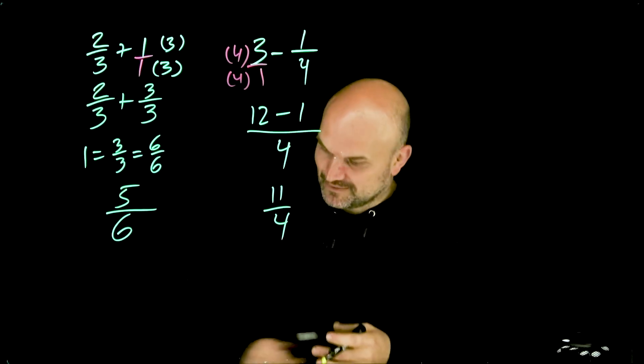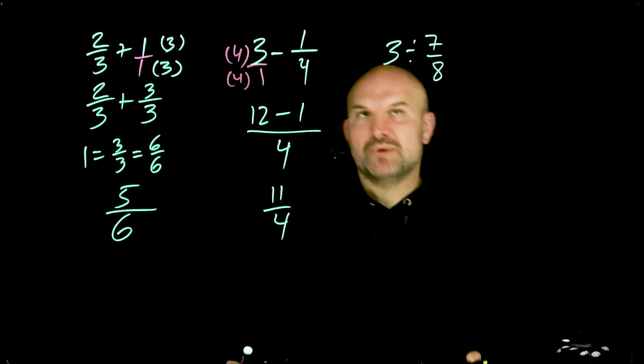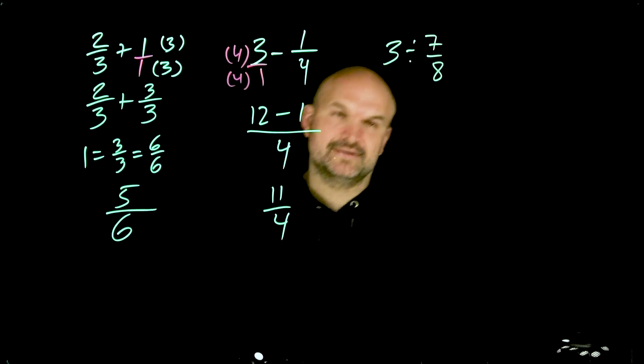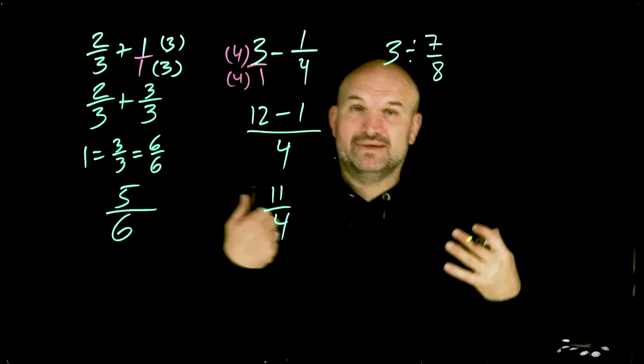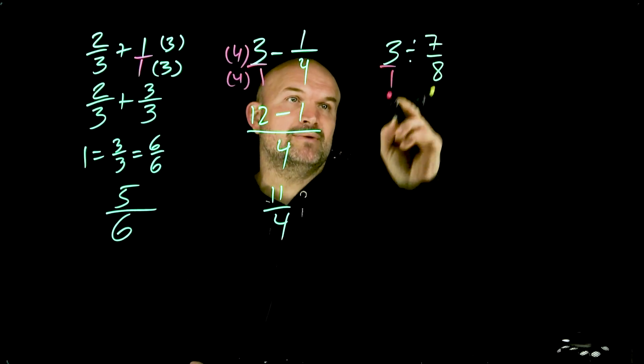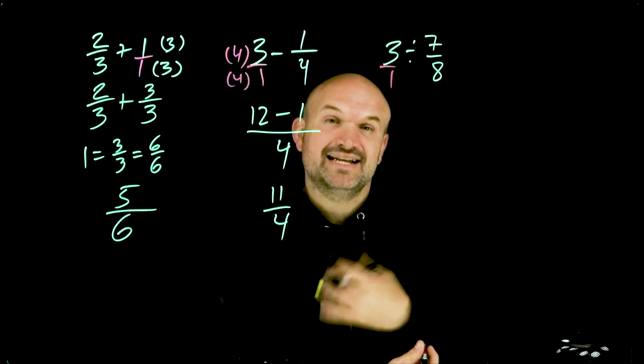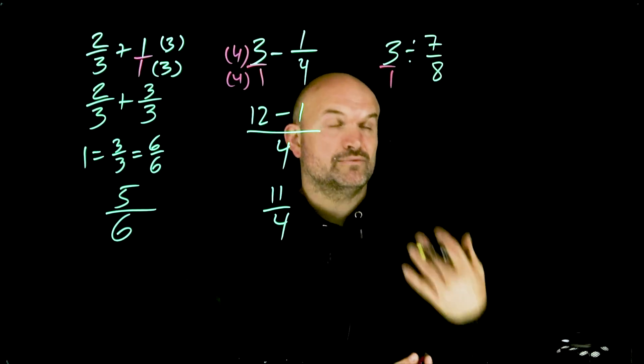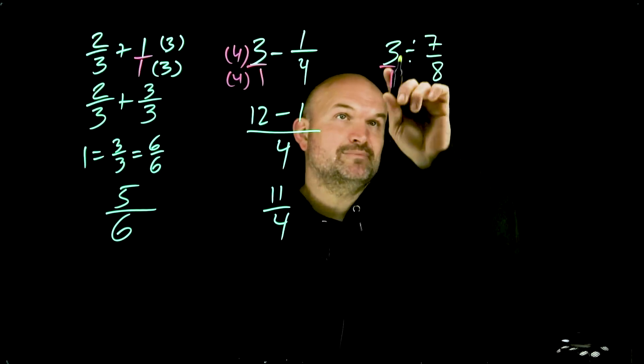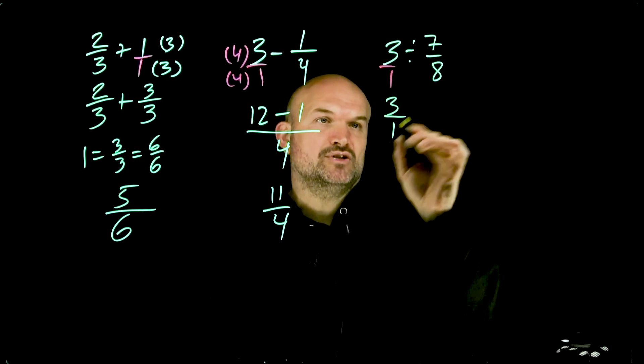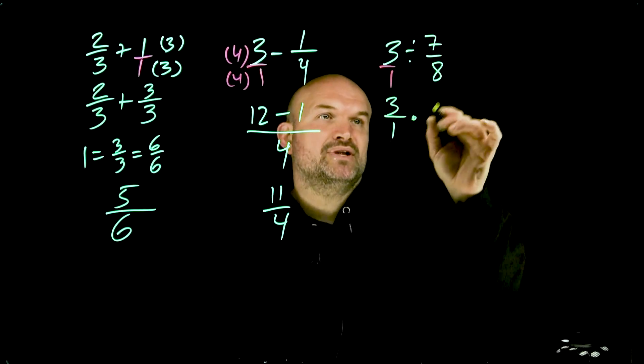Now let's get into some division. All right. So the first one is 3 ÷ 7/8. Now, again, what I always like to do is I don't want to deal with my integers. I'm going to rewrite this as a fraction. And just remember when you are dividing a fraction, that is the same thing as multiplying by the reciprocal. So what we can simply do is just rewrite this as a multiplication problem and reciprocate your divisor.